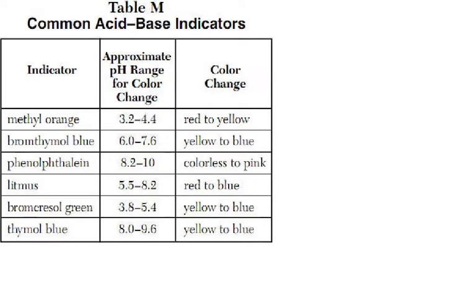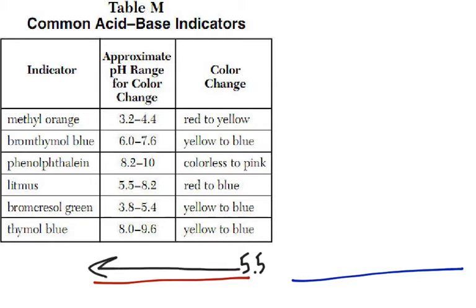For example, let's look at litmus. We have red and we also have blue. The nice thing about litmus is that if you have red, you know your pH is 5.5 or below. You know you're definitely acidic.